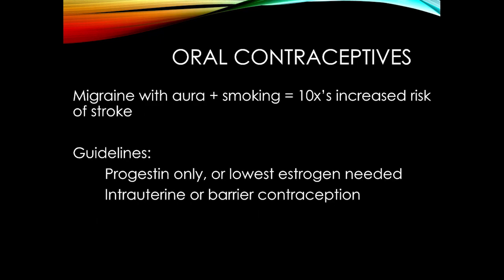Very importantly, women who have migraine with aura and who smoke have a significantly increased risk of stroke. Combined with oral contraceptive use, this is not an appropriate mix — oral contraceptives, smoking, and migraine with aura. Generally we try to use the lowest estrogen component or some other form of birth control in that setting.